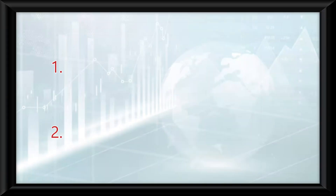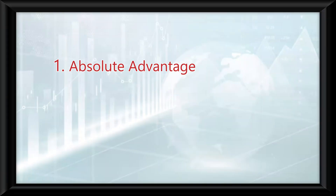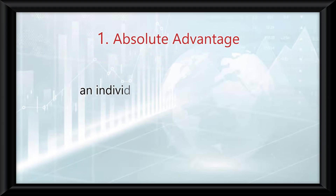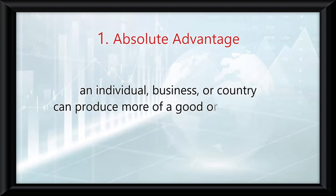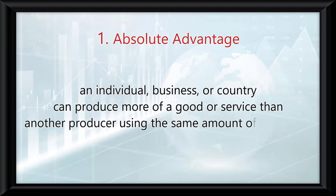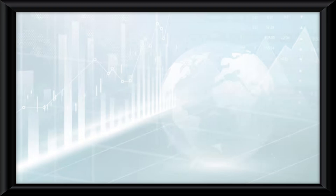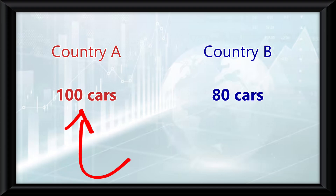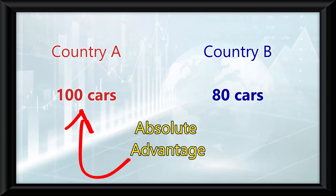Topic 1.4 is all about different advantages in trade. Let's start with defining two terms: absolute and comparative advantage. Absolute advantage occurs when an individual, business, or country can produce more of a good or service than another producer using the same amount of resources. So if country A can produce 100 cars using the same resources that country B uses to produce 80 cars, country A has an absolute advantage in car production.